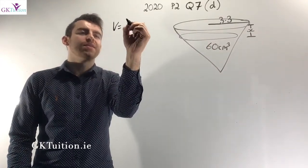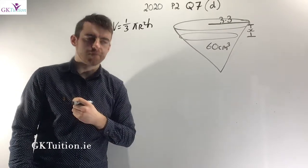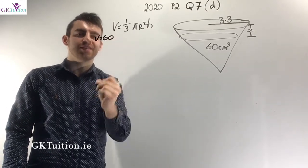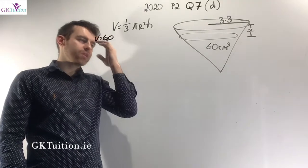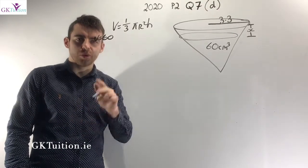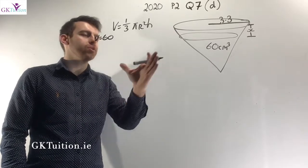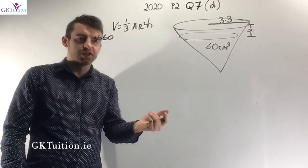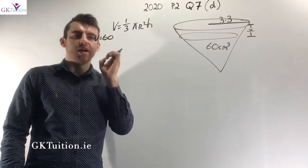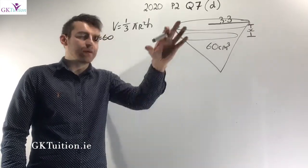Using similar triangles, the radius of the cone is 3.3 and its height is 8.37. The water triangle has radius r and height h. By similar triangles: r/3.3 = h/8.37. I want to isolate h, so multiplying both sides by 8.37 gives h = 8.37r/3.3. Now I have h in terms of r, which I can substitute into the volume formula.